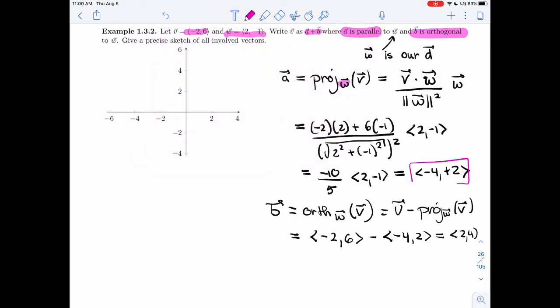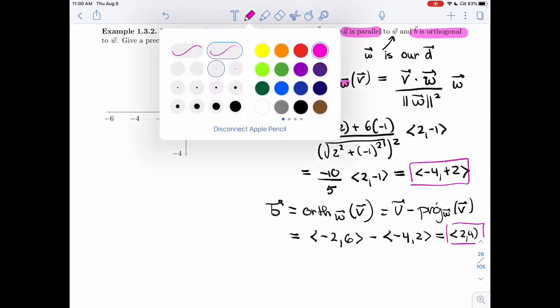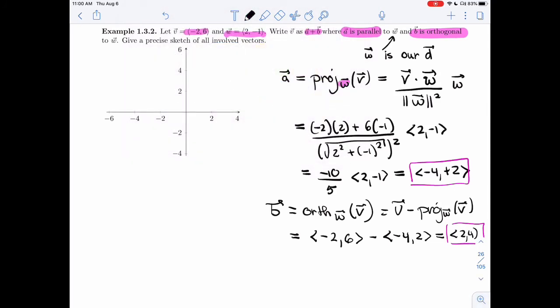We have our A, we have our B. Now we're ready to sketch everything to make sure that the picture looks right. So let me put V and W first. So V is (-2, 6), so here is V. W is (2, -1), so here is W. Let me use blue and red because that's what we've been using. I'm going to use blue for (-4, 2). I'm going to use blue for A. So this is going to be A.